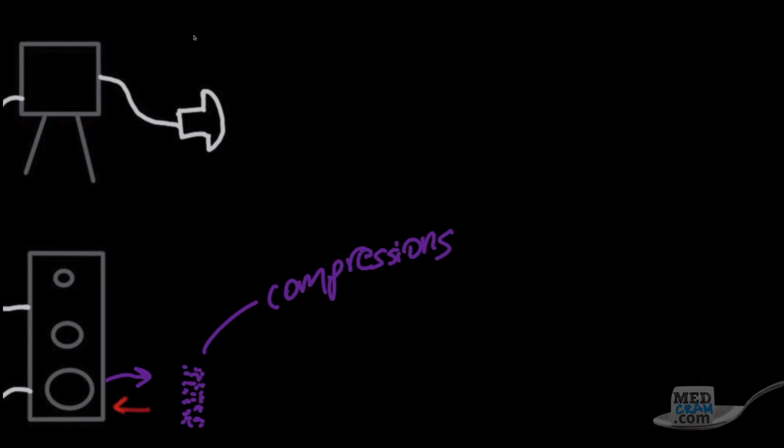As we touched on before, as the speaker pumps in and out, it generates sound waves. Well, how does it really do this? As it pumps out, it compresses air molecules. And these areas of highly compressed air molecules are called compressions. And as it goes back in, it creates this vacuum effect. And there are areas of low pressure called rarefactions. With this alternating in-out movement, it creates alternating compressions and rarefactions.